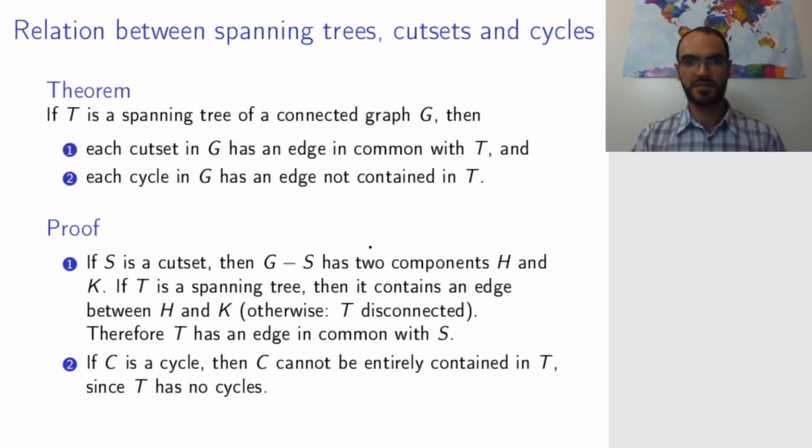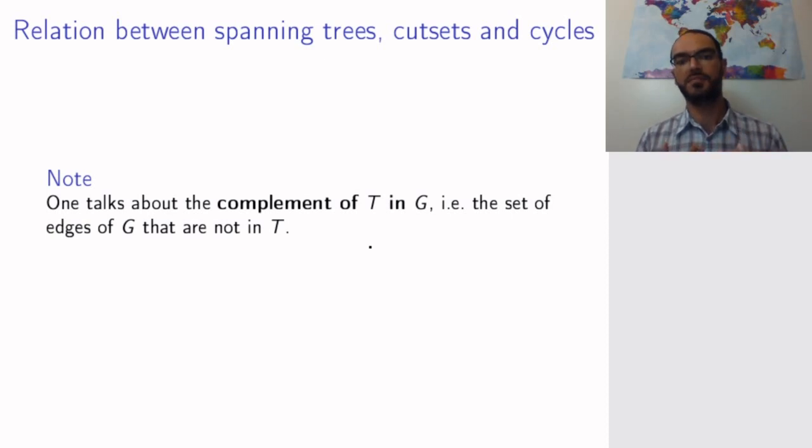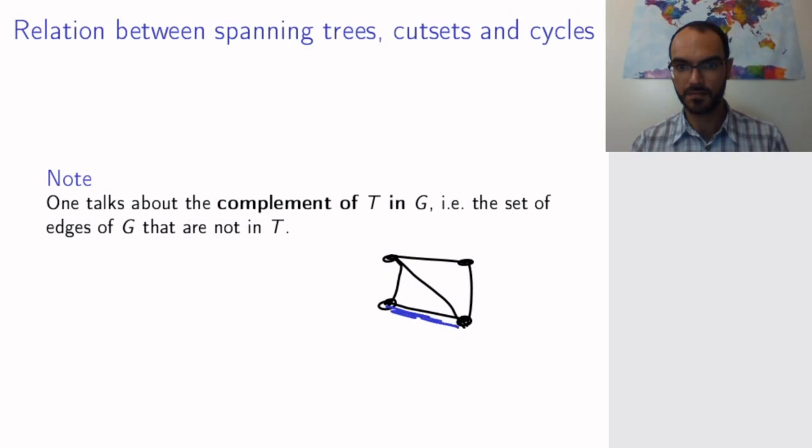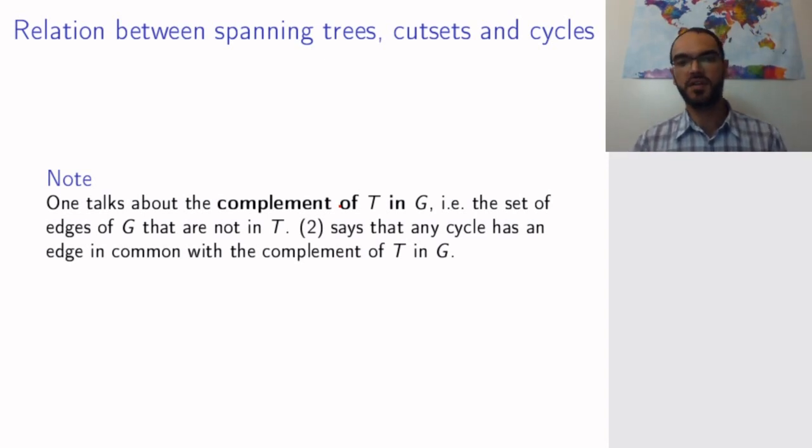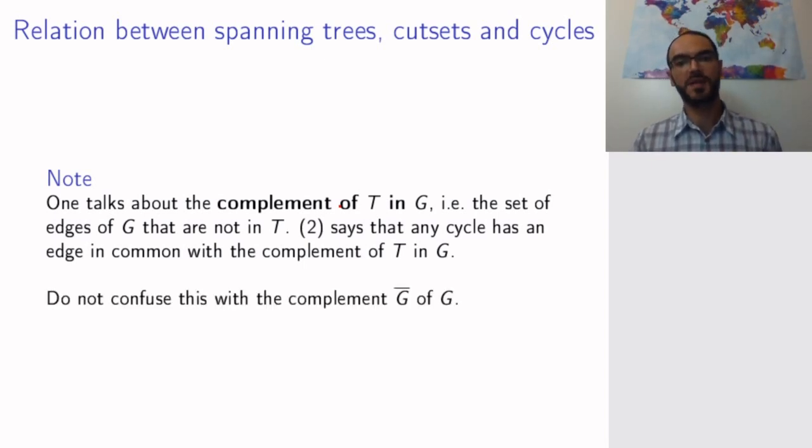Another way to state this part two of the theorem is by talking about complements. So, if you have a graph G, for example, this one, assume that we have this blue spanning tree, then the complement of this tree in the graph is the set of all edges that are not in the tree. So, the red set. This is the complement of the tree in G. And so, part two of the theorem says that any cycle has an edge in common with the complement of the tree.